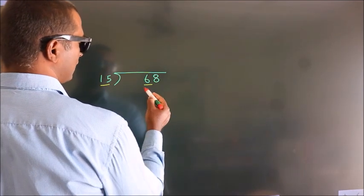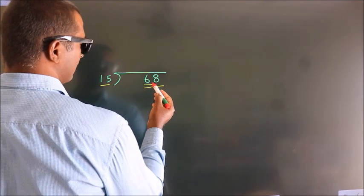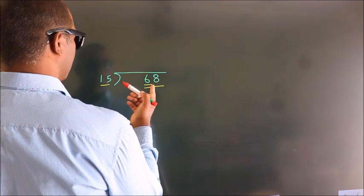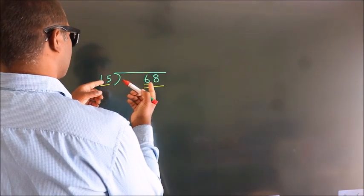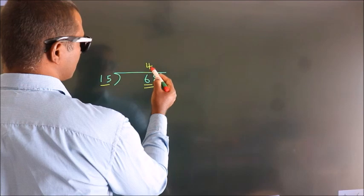So we should take two numbers, 68. A number close to 68 in 15 table is 15 fours, 60.